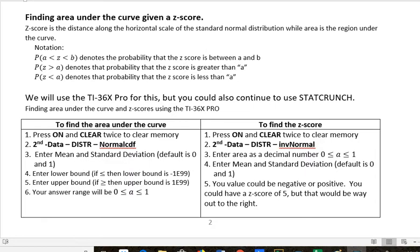And so the notation that I would like you to be familiar with is that if we're looking for the probability that z is between a and b, we use a is less than z is less than b. For the probability that z is greater than a, we use the greater than symbol, and for less than, we use the less than symbol.